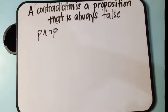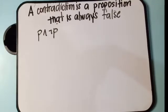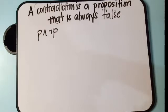Next, let's have the second one — contradiction. If tautology means the proposition is always true, contradiction is a proposition that is always false. It's like the negation of a tautology.